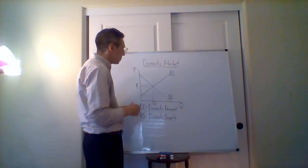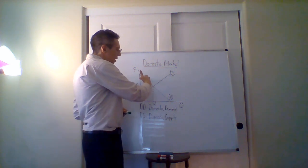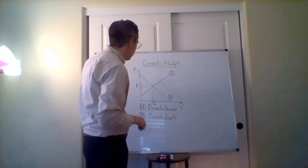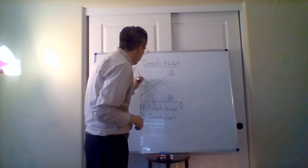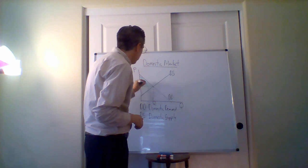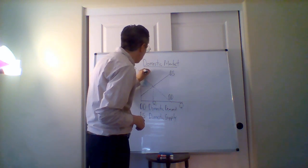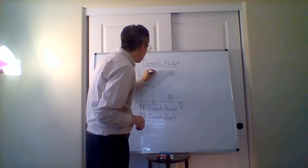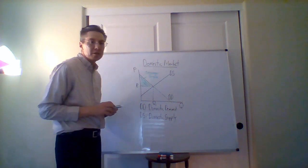It's basically represented by this area in green. So consumer surplus - that's the net benefit to the buyers.